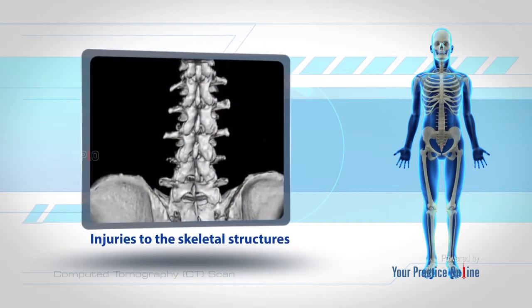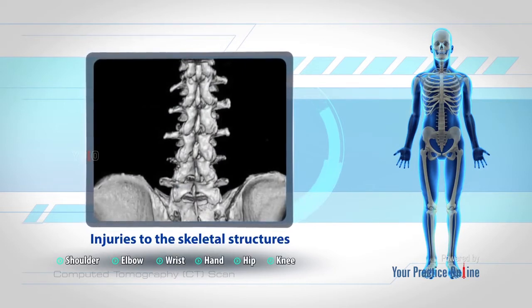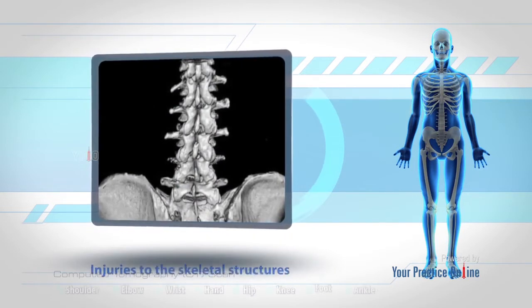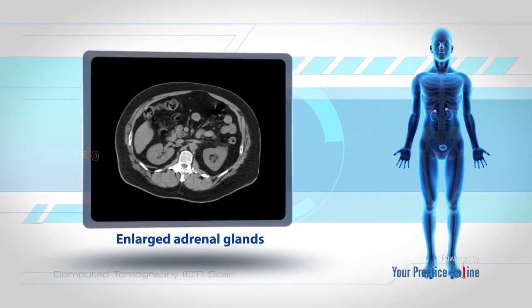CT scans also help diagnose injuries to the skeletal structures, including the shoulder, elbow, wrist, hand, hip, knee, foot, and ankle, as well as enlarged adrenal glands.